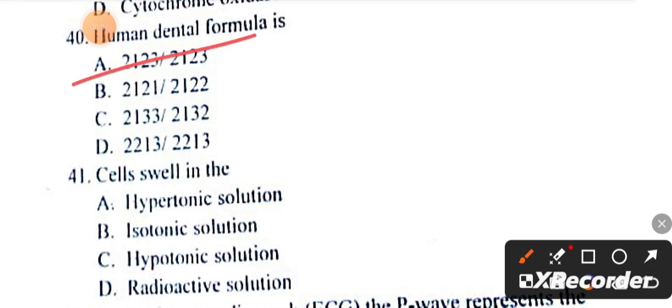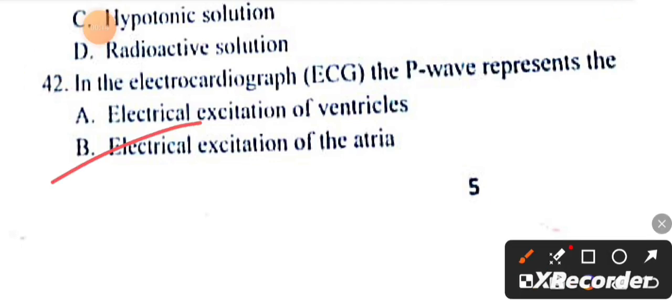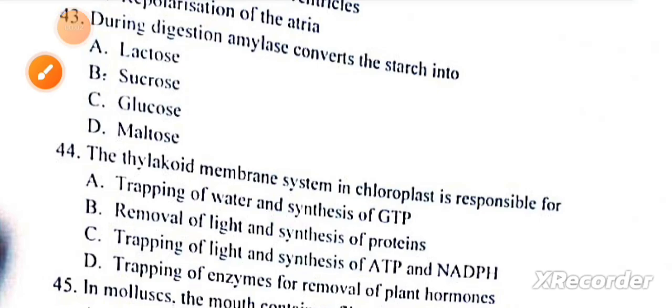Cells swell in hypotonic solutions. Question number 42: In the ECG, P wave represents the electrical excitation of the atria. During digestion, amylase converts starch into maltose.